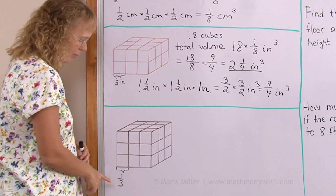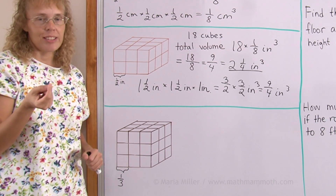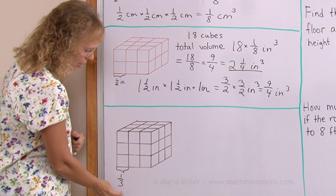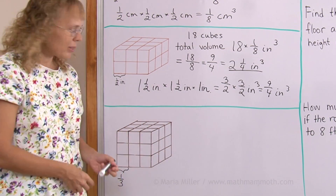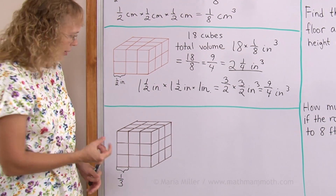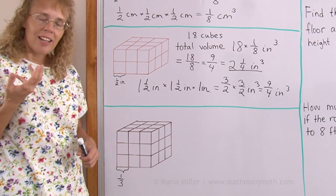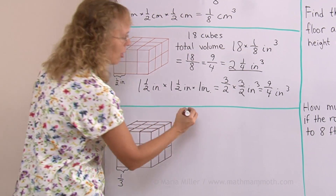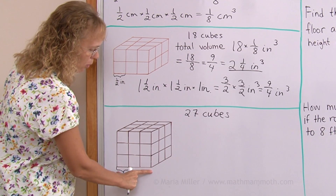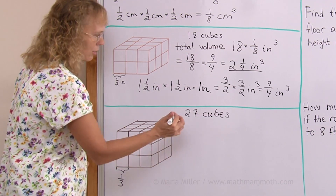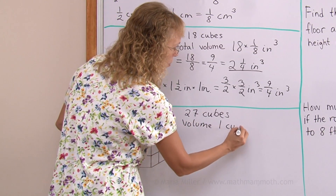One more time. Here, if we imagine that the edge length of a single cube is one-third of a unit — whether inch, centimetre, or whatever — we will figure out the total volume of this rectangular prism. How many little cubes are there? Three this way, three this way — so nine on the bottom and three layers high — that's 27 cubes in total. The total volume: this here is one unit, one unit, one unit, so the volume of the whole thing is one cubic unit.